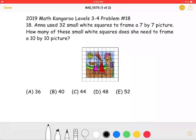This is the 2019 Math Kangaroo Levels 3-4, Problem Number 18. Anna used 32 small white squares to frame a 7x7 picture. How many of these small white squares does she need to frame a 10x10 picture?